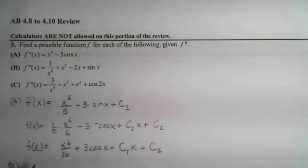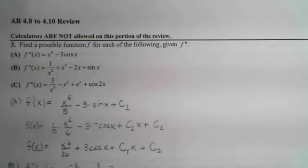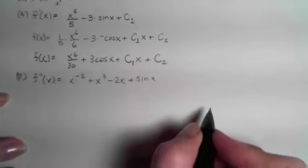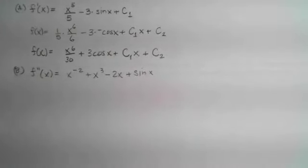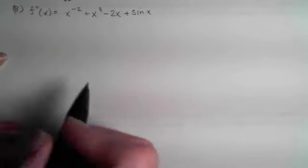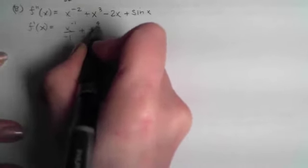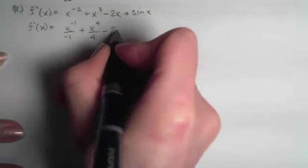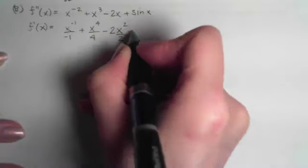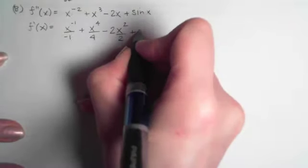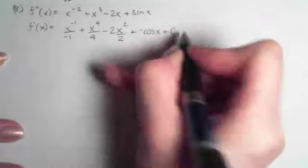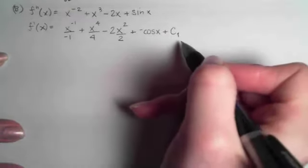For part B, I'll write down the second derivative and rewrite everything as powers of x, because it makes it easier to apply the power rule backwards. Taking the antiderivative of f double prime to get f prime: I apply the power rule backwards — add 1 and divide by the new power — for each term. Then I ask what did I take the derivative of that gave me sine? That would be a negative cosine. I add a constant, and since I'm going to do this process twice, I use c sub 1 instead of just c.